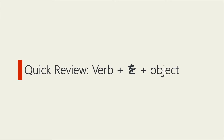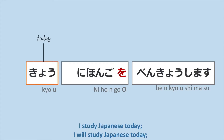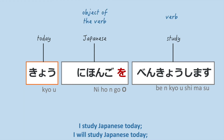Let's do a quick review. 勉強します means 'study' — it's the verb of this sentence. 日本語 means 'Japanese,' and it's marked with the を particle, so it's the object of the verb. 今日日本語を勉強します means 'I study Japanese today.'